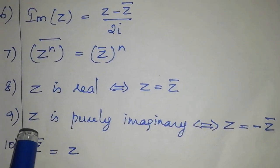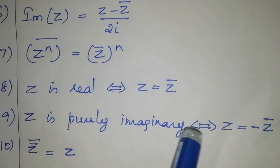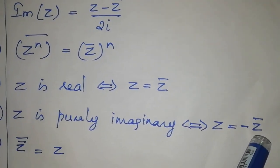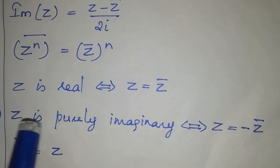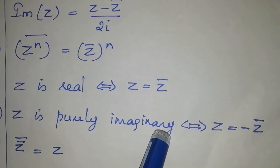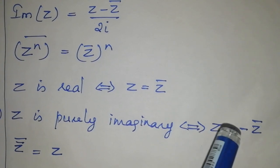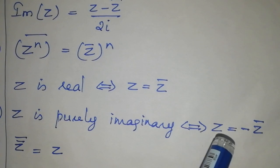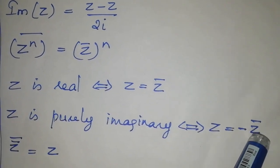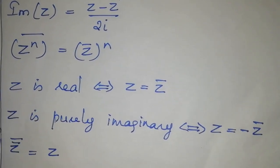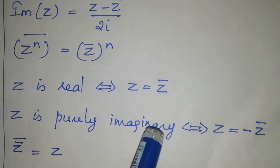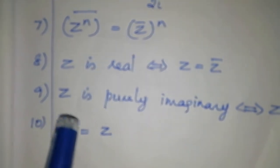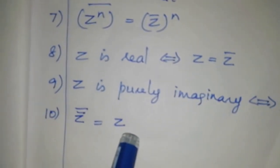The ninth property is: z is purely imaginary if and only if z equals minus z bar. That is, if z is a purely imaginary number then z equals minus z bar, and if z equals minus z bar then z is purely imaginary. The last property is: z bar the whole bar equals z.